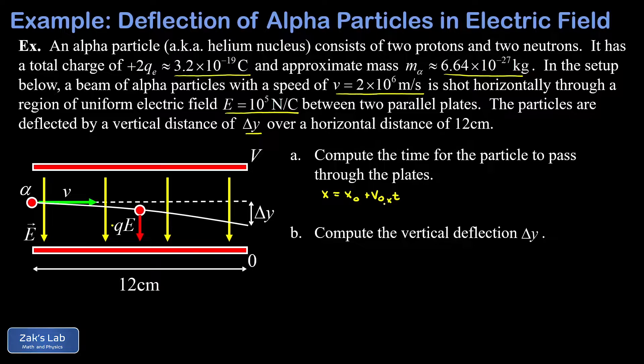There's no acceleration term on that, because there's no forces acting horizontally. Now, another way to write this is to subtract the X naught from both sides. And X minus X naught is just a change in X. So I'm going to write delta X is V naught X times T.